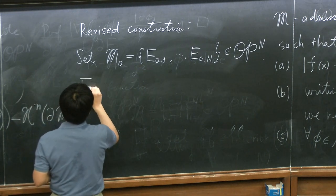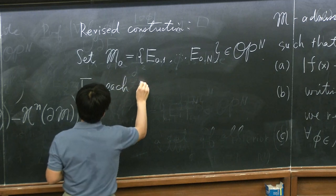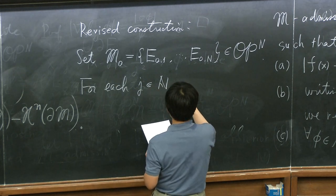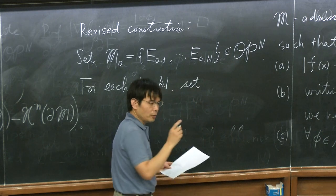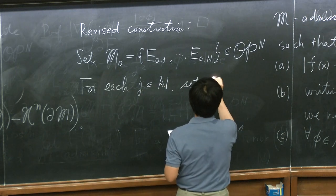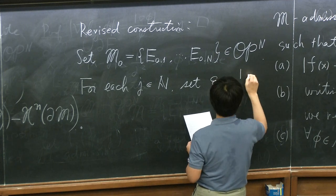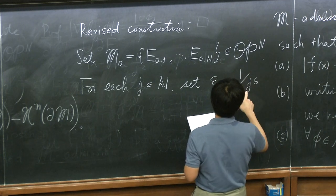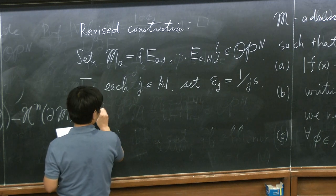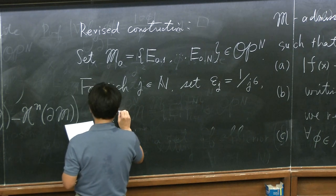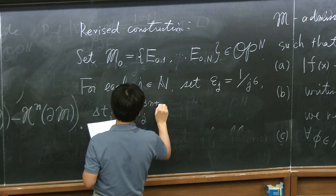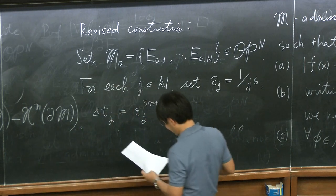For each j (which at the end goes to infinity), set ε_j — the scale of the smoothing from yesterday's mean curvature computation — and also the time step δt_j. The precise numbers don't matter too much, but they are chosen to be sufficiently small. Please don't worry about these precise numbers.